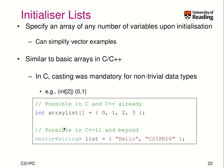You can do the same in C++ starting with C++11. You can say you have a vector of strings and call this vector 'list'. Then, on the right-hand side, use curly brackets to specify that this list contains two strings — for example, 'hello' and 'CS1PR16'. That's really the same notation as with arrays, but it works now as well for containers that use templates.